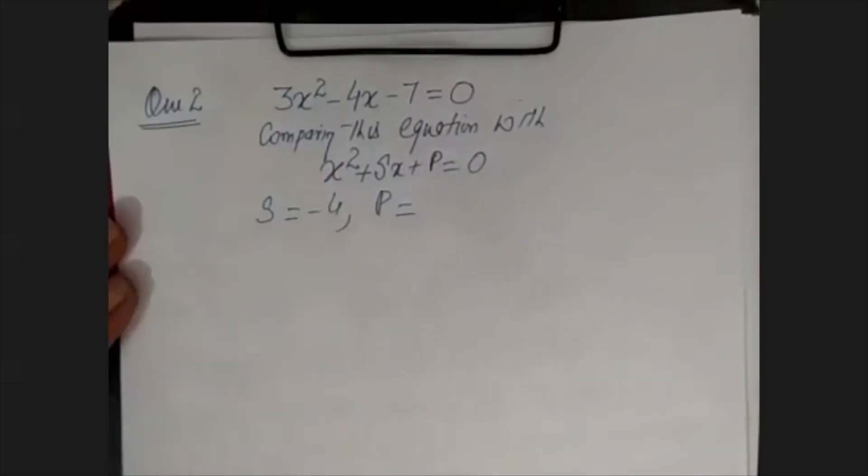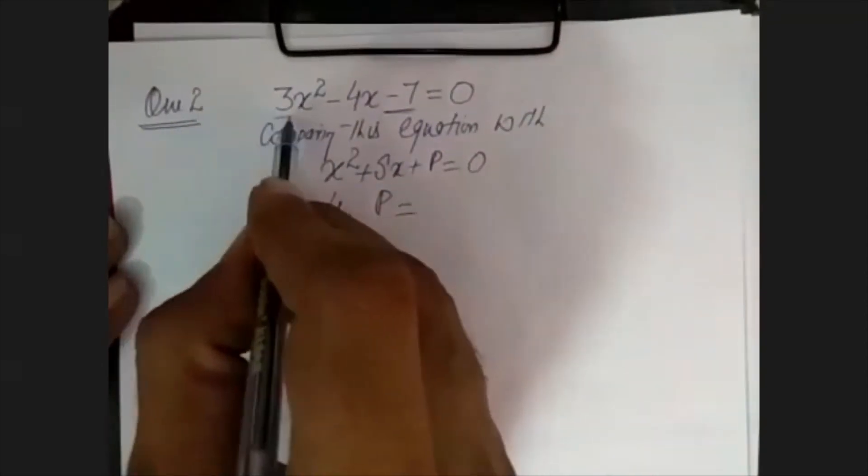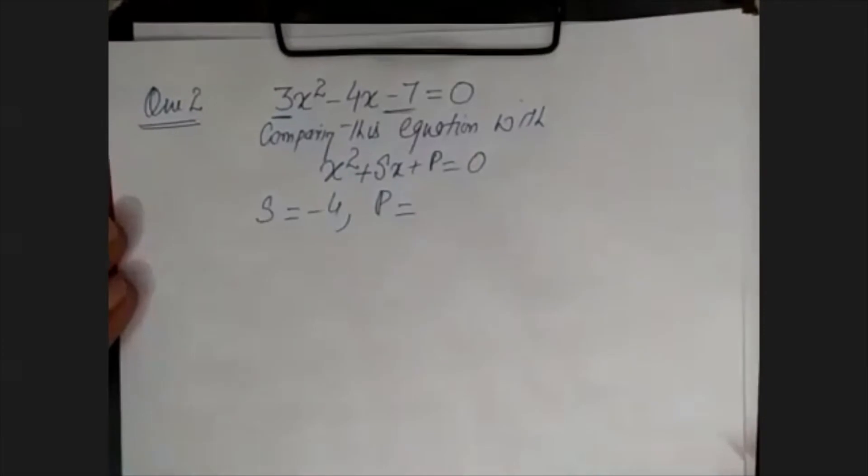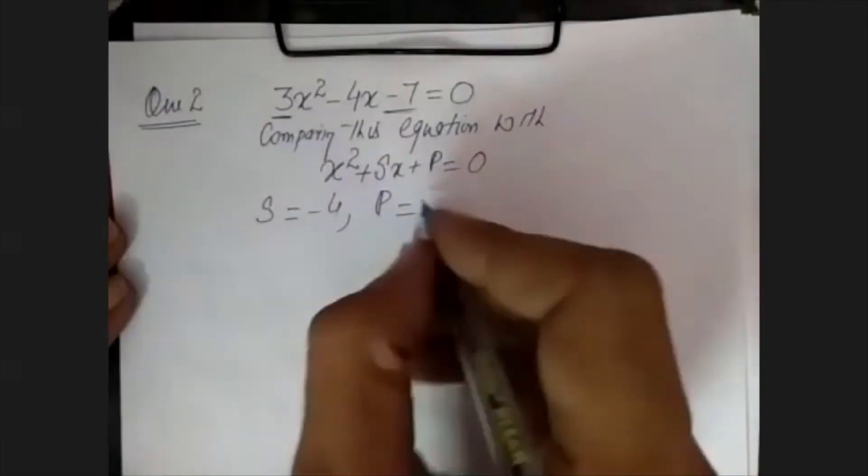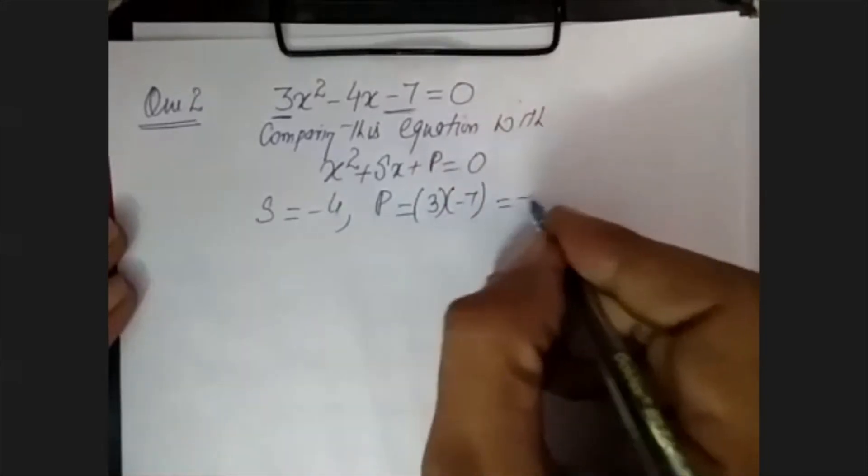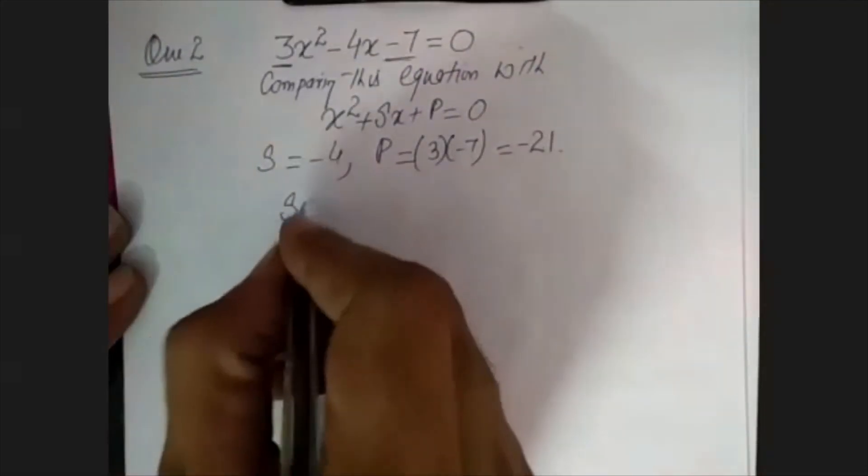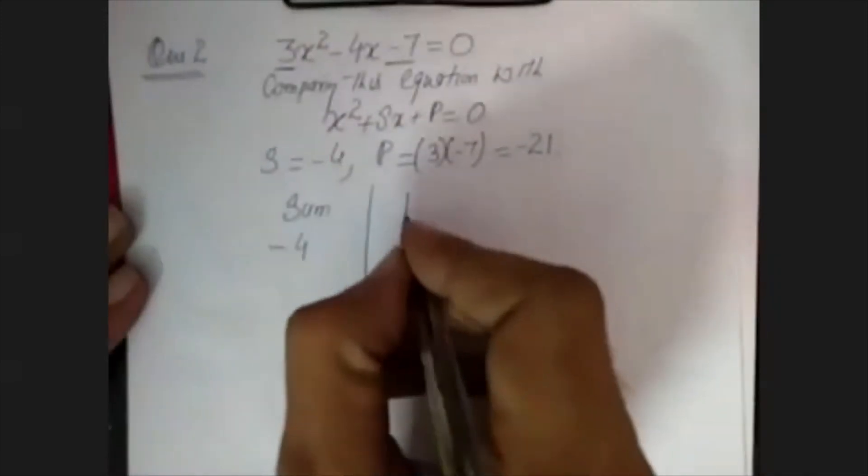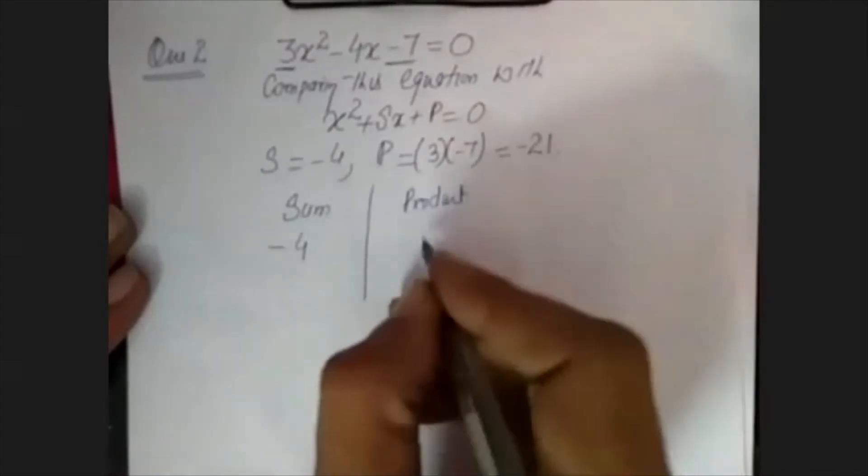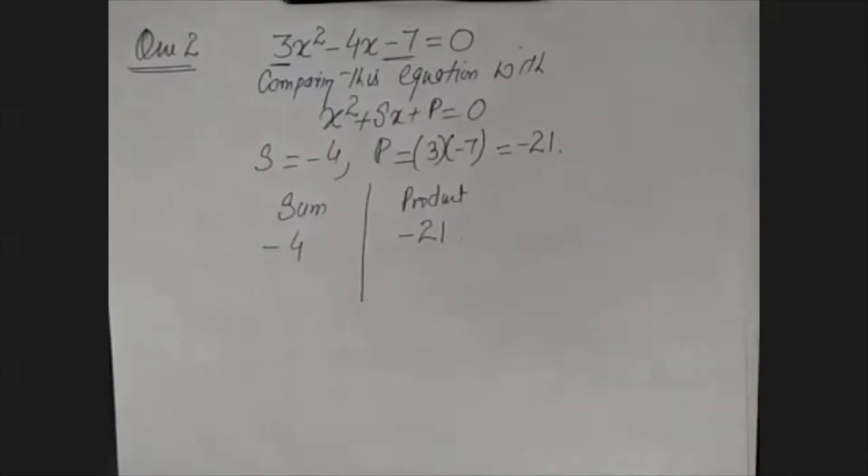The first step is comparing this equation with ax² + bx + c = 0. The sum is -4. And as I told you in the last question, the product will be this constant coefficient multiplied by the x² coefficient. When we multiply both, 3 and -7, the product is -21.